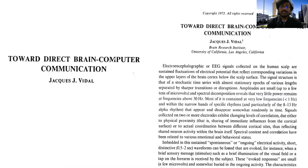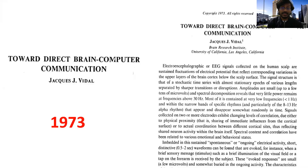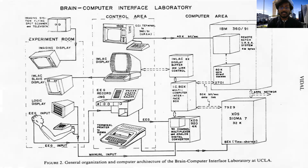One of the first BCI systems was proposed by Professor Vidal from the University of California, Los Angeles. He showed the architecture required to develop a BCI system. This work was proposed in 1973 and he demonstrated the whole system, which can be seen in this picture.